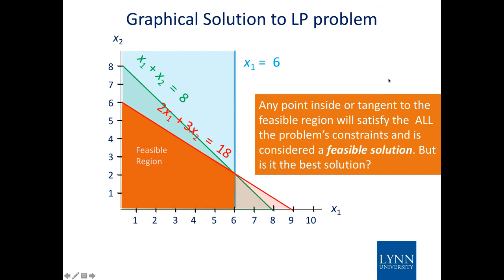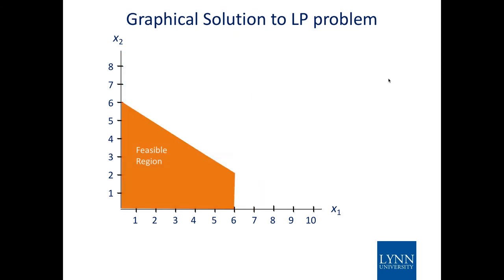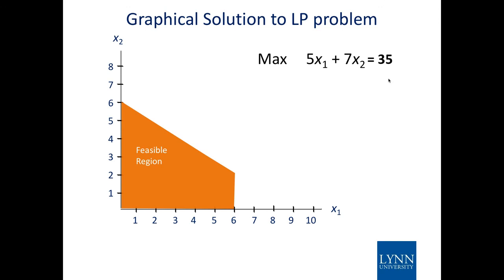Any point inside or tangent to that feasible region gives a feasible solution, but the question is whether it's the best solution. Looking at the profit maximizing function — max 5x1 plus 7x2 — if both x1 and x2 were 1, 5 times 7 equals 35. So let's try the profit line at 35. Setting x1 to 0 gives x2 equals 5; setting x2 to 0 gives x1 equals 7, giving coordinates (0, 5) and (7, 0).